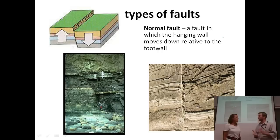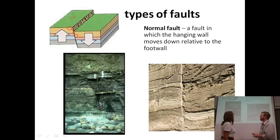The first type of fault we're talking about is a normal fault. It's definitely not un-normal, but it's normal. A normal fault is one in which the hanging wall moves down relative to the foot wall. We might have to talk about the hanging wall and foot wall first, just to give people an idea.